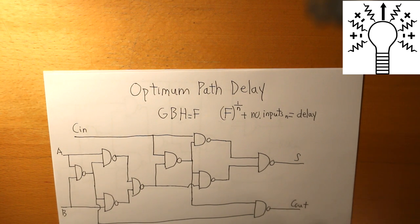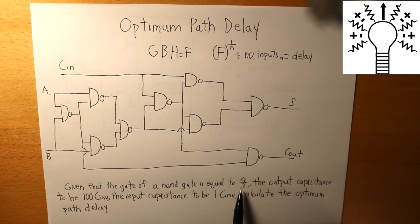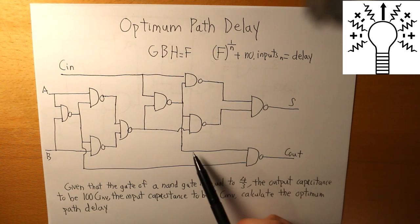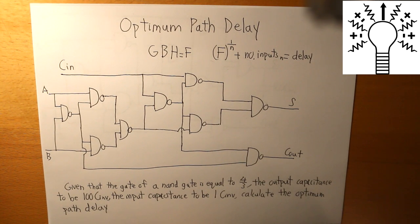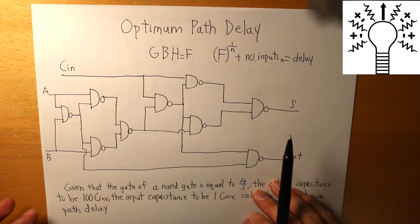Now the question is: given the full adder, given that the gate of a NAND gate is equal to 4 over 3, the output capacitance is 100, and the input capacitance is 1, calculate the optimum path delay given this schematic. So first what we're going to do is calculate what our effort delay is going to be.